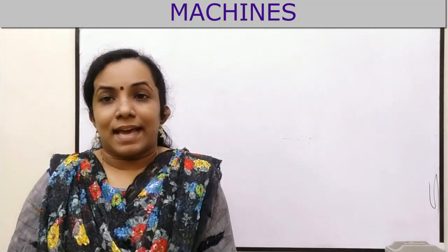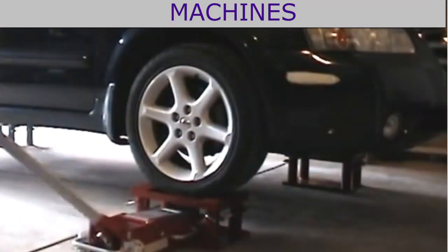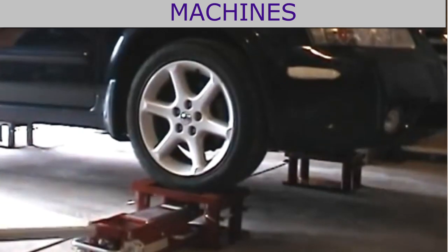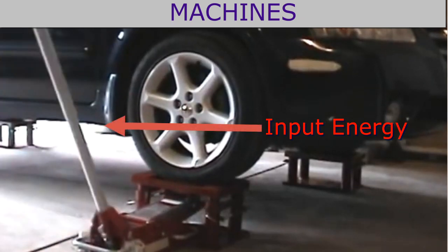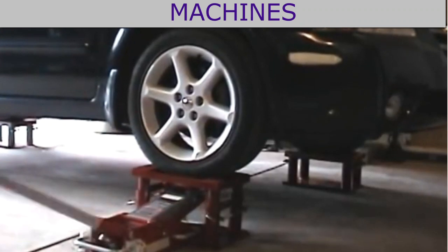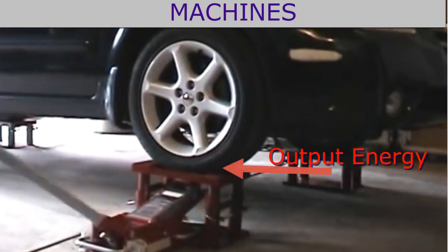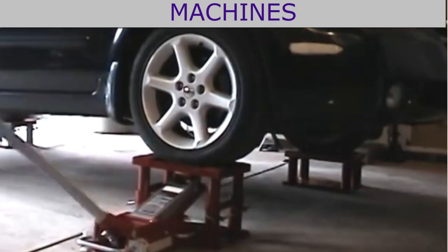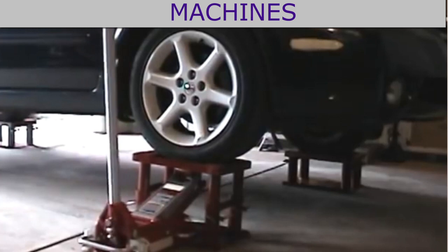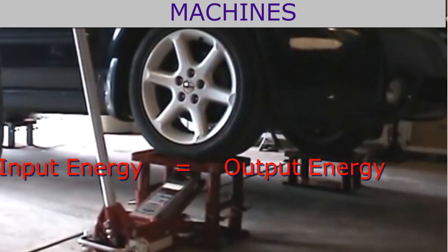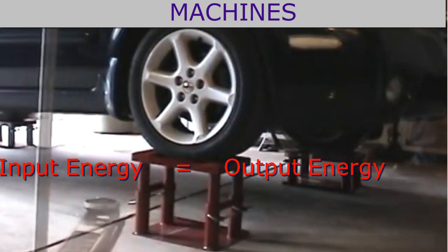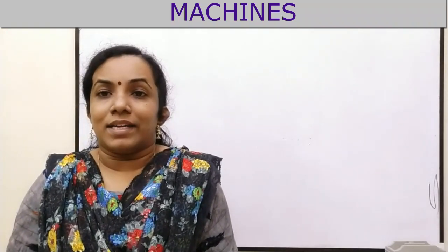We can compare this activity with the case of a machine. A machine is given energy at the effort point, which is called input energy. The machine uses this input energy to overcome the resistive force offered by the load. If the whole energy is utilized and there is no loss of energy in any other means, then input energy given to the machine will be equal to the output energy given by the machine. Such a machine is called an ideal machine.